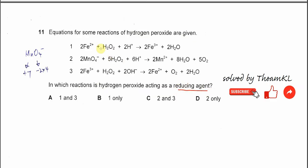We need to check the oxidation number of the species that reacts with H2O2. For the first equation, iron 2 is oxidized from positive 2 to positive 3, so H2O2 in this equation is an oxidizing agent.